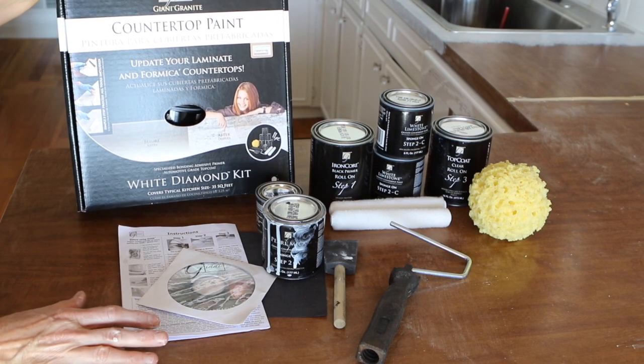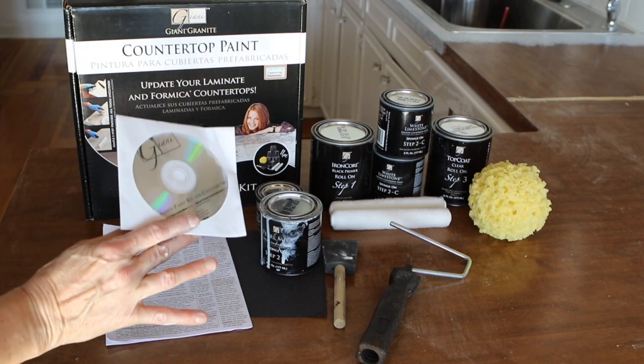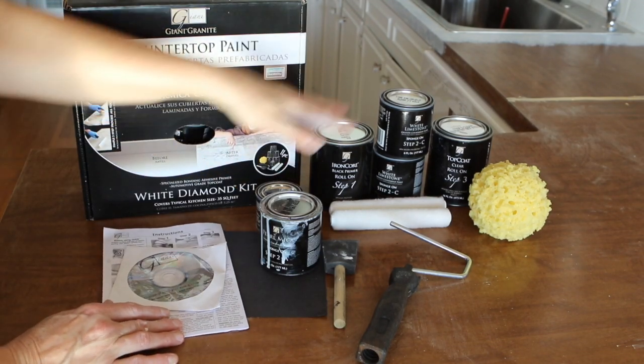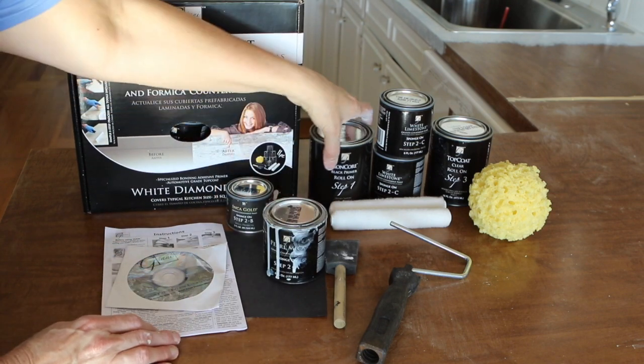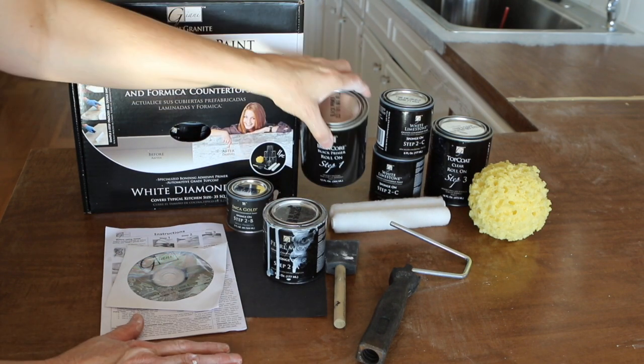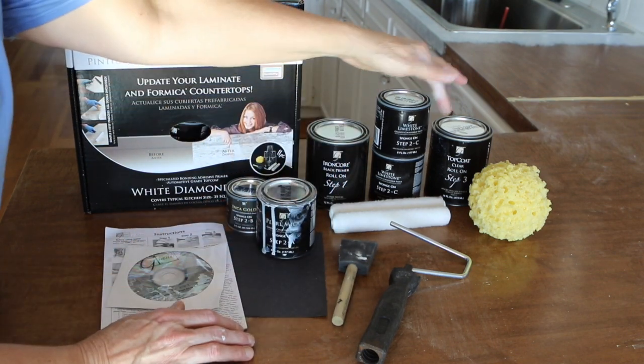Everything that you need comes in the kit. It comes with instructions, a DVD that you can watch on your computer, and then all the products. It's done in steps, so you would start with a black coat for your primer, and then you just layer these other paints and they all say step one, step two, step three. It's really easy.